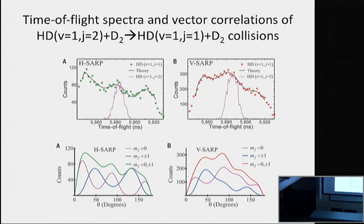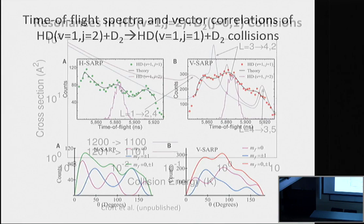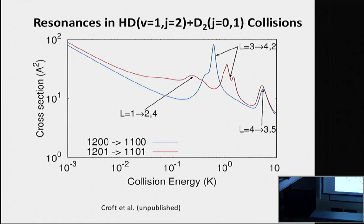Moving on to the HD + D2 experiment — they have also more recently published HD + H2 experiments in H chemistry as well. We need to compute the cross-section for this one. As you can see, there are resonances: an L=3 resonance and an L=1 resonance. The 1,2 labels are the V,J levels of HD and 0,0 is that of D2. In the experiment, 60% of D2 is in J=0 and about 30% is in J=1, just a statistical population of D2. We are in the process of computing differential cross-sections to try to make a one-to-one comparison with the experiment.